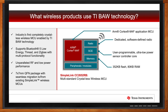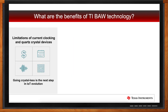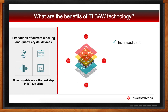What does BAW buy you as an engineer? There are a lot of benefits. The BAW device helps overcome limitations you run into with quartz crystal devices, which you'd typically use in an application like this. BAW allows you to increase performance — you have much more stability than a typical crystal solution, a simpler RF design, and a smaller size solution. In many cases you'll also have a lower cost solution because you're not having to source and buy external quartz crystal resonators.